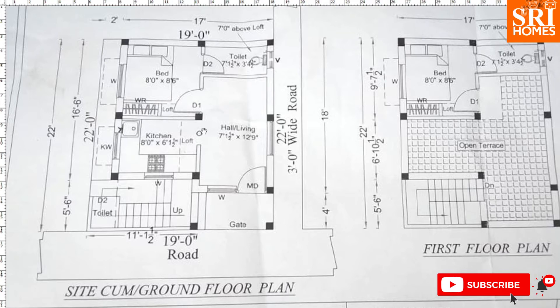Then we have a kitchen. The kitchen is a compact room, measuring 8 by 6 feet. Here we also have a wash place, and the kitchen offers a lot of space.